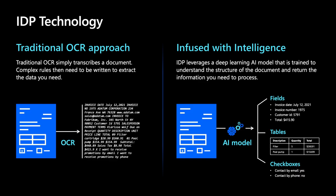With traditional OCR technology, it's possible to transcribe a document, but then you need to set up complex rules to interpret and extract the data you need, which makes it hard to automate a document in an end-to-end process. IDP technology is more complex — it's not just simple OCR. It actually leverages a deep learning AI model that's trained to understand the structure of the document and to return only the information that you need.